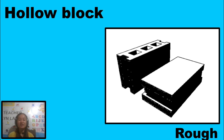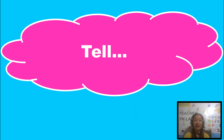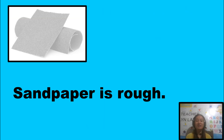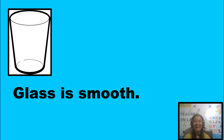Now, it's your turn. You have to tell which object is smooth and which object is rough. Are you ready? Yes, you're right — sandpaper is rough. Glass is smooth.